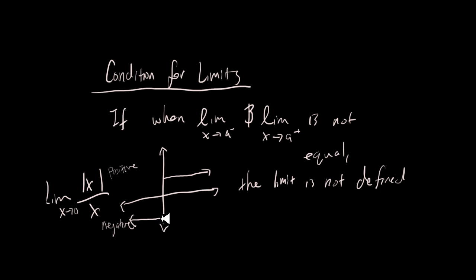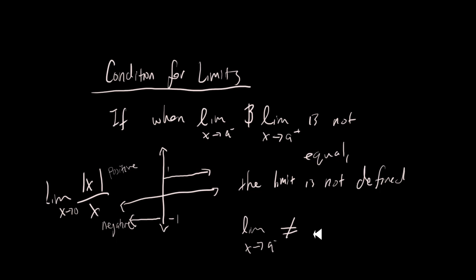So if it approaches zero from the right and the left, there's a huge jump — this value is negative one and this is one. It's completely different values, and that's why if the limit from the right does not equal the limit from the left, the limit is not defined. That concludes part two of fundamentals for limits — hope you enjoyed it.